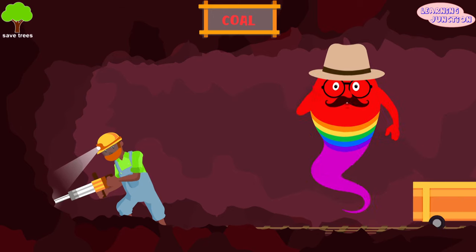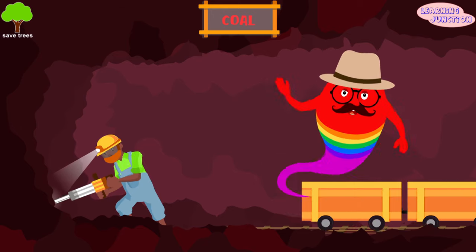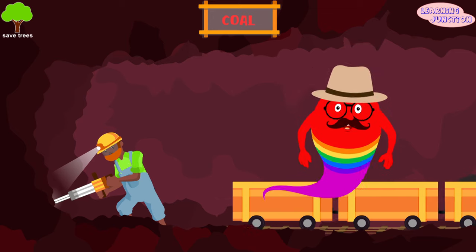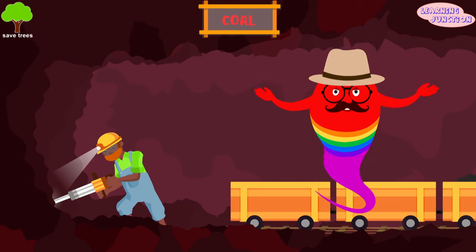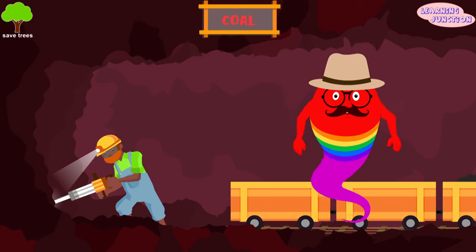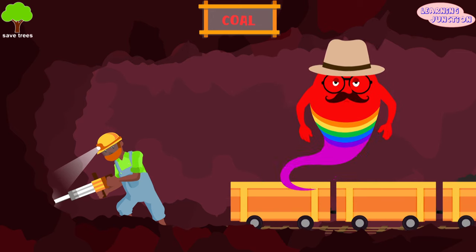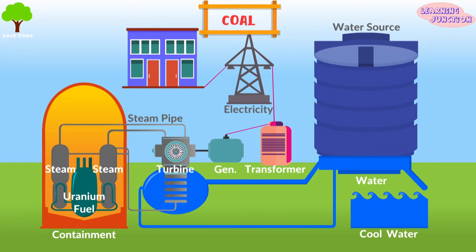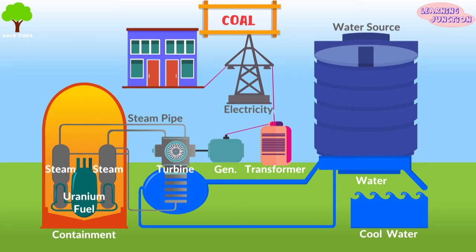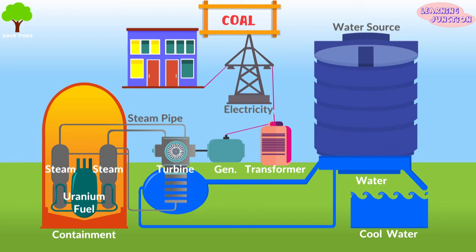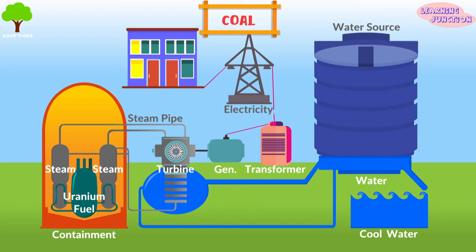Most of the coal is transported by goods trains to power plants and there it's burned to make steam. The steam turns turbines and then it produces electricity. Coal is one of the most reliable and cheapest sources of energy.